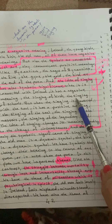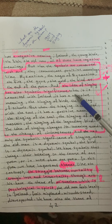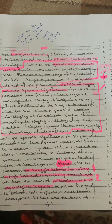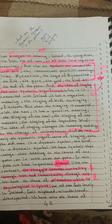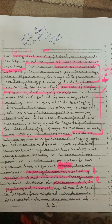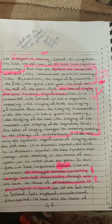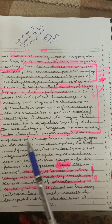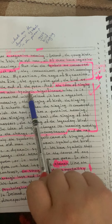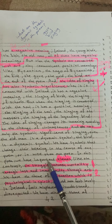The idea of singing also has a symbolic meaning. Anything related to Ireland — the singing of birds and schools — carries a negative meaning, while the positive meaning is connected to the singing of the soul and the legendary masters. The idea of singing changes its meaning according to the change of circumstances, and that is its symbolic significance.